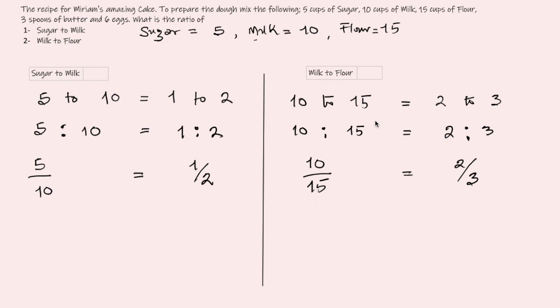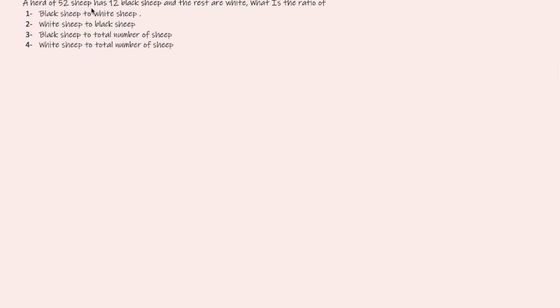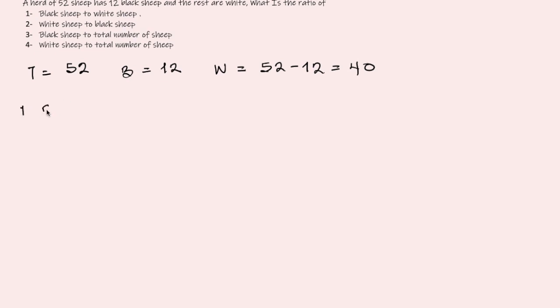Now that we understand how to express ratios in three different forms, let's move on. A herd of 52 sheep has 12 black sheep and the rest are white. We need: the ratio of black sheep to white sheep, white to black, black to total, and white to total. Total sheep equals 52, black sheep equals 12, and white sheep equals 52 minus 12, which is 40. Black to white is 12 to 40. White to black is simply reversed: 40 to 12.